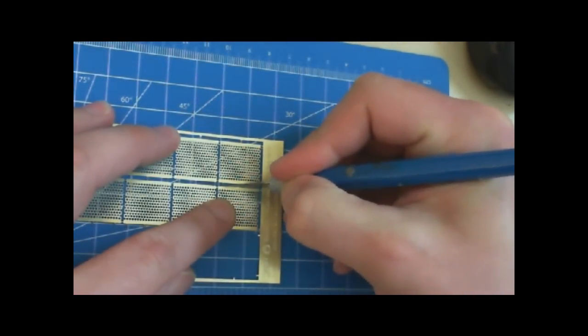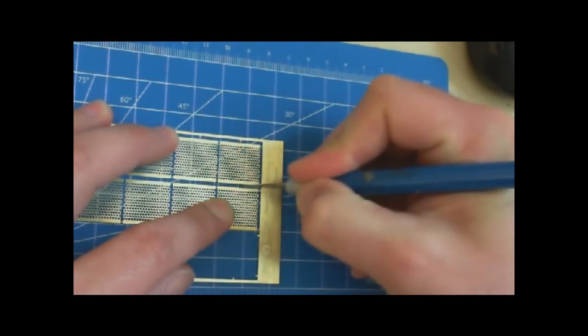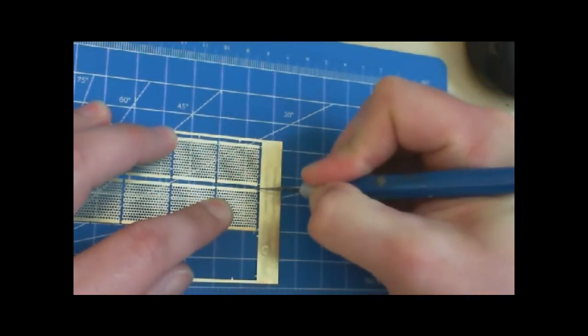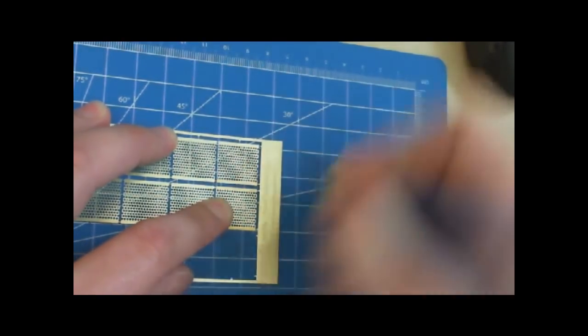I'm just going to press it up against the body of the flooring section. Press my blade down against it.